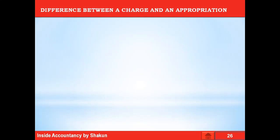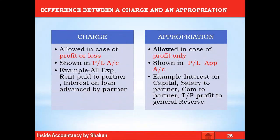First, we will talk about the difference between a charge and an appropriation. A charge is an item which is allowed in case of profits or in case of losses. These are items shown in the profit and loss account. For example, all the expenses written on the debit side of the P&L account are all charges. For example, salary to a manager will be allowed no matter whether the firm earns profits or losses. Other examples of charges are rent paid to a partner, interest on loan advanced by a partner, etc.